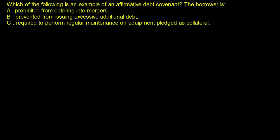The easy way to remember this is: negative debt covenants are things that are very restrictive, while positive ones are things you should be doing anyway.